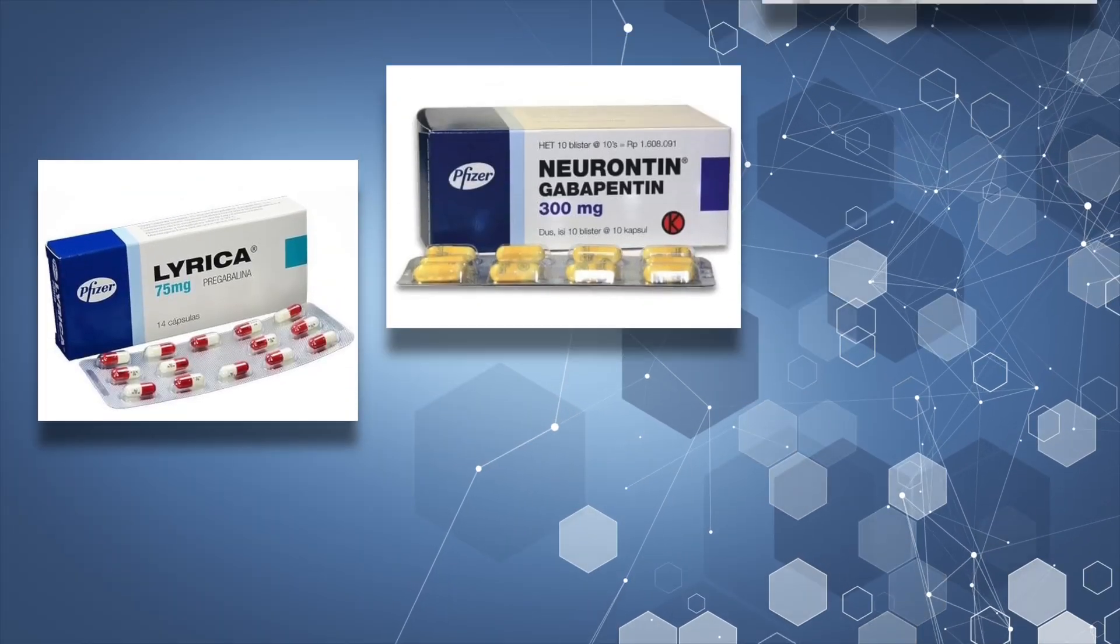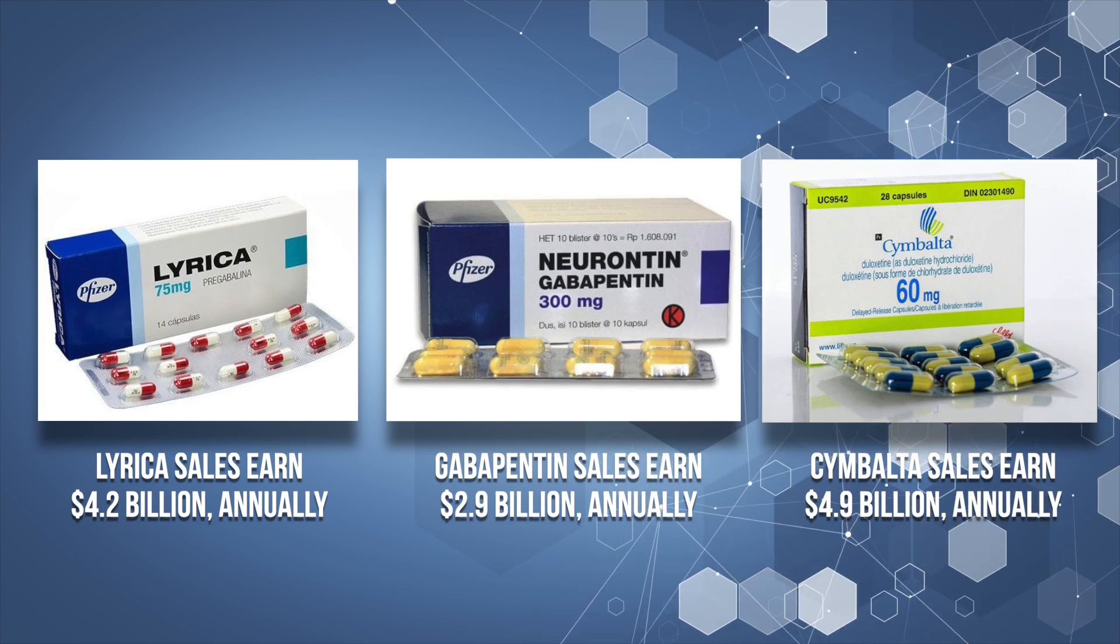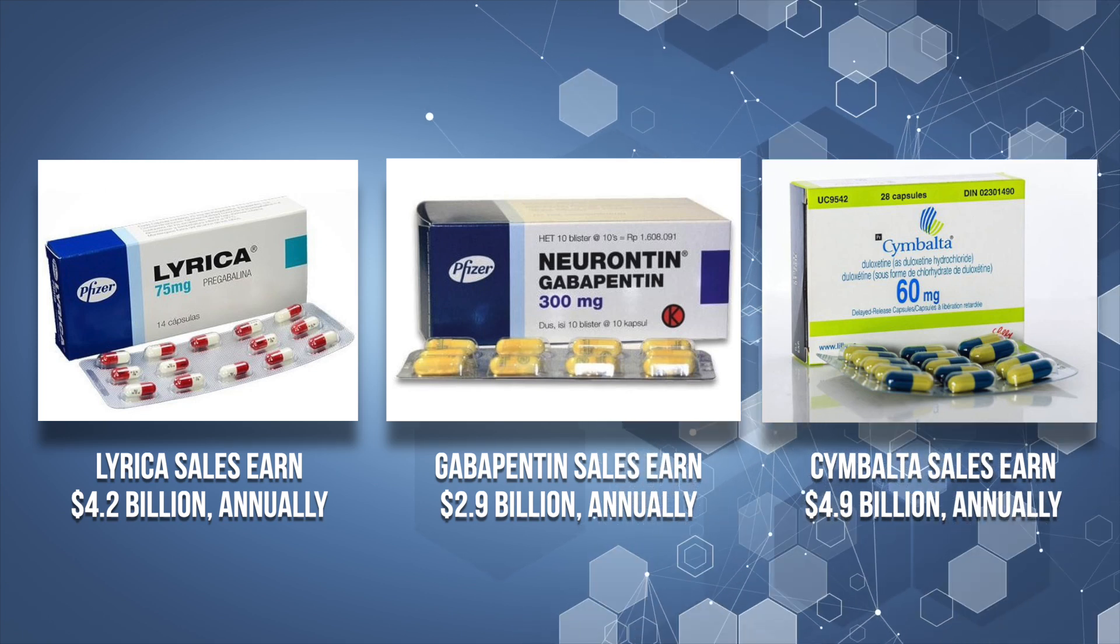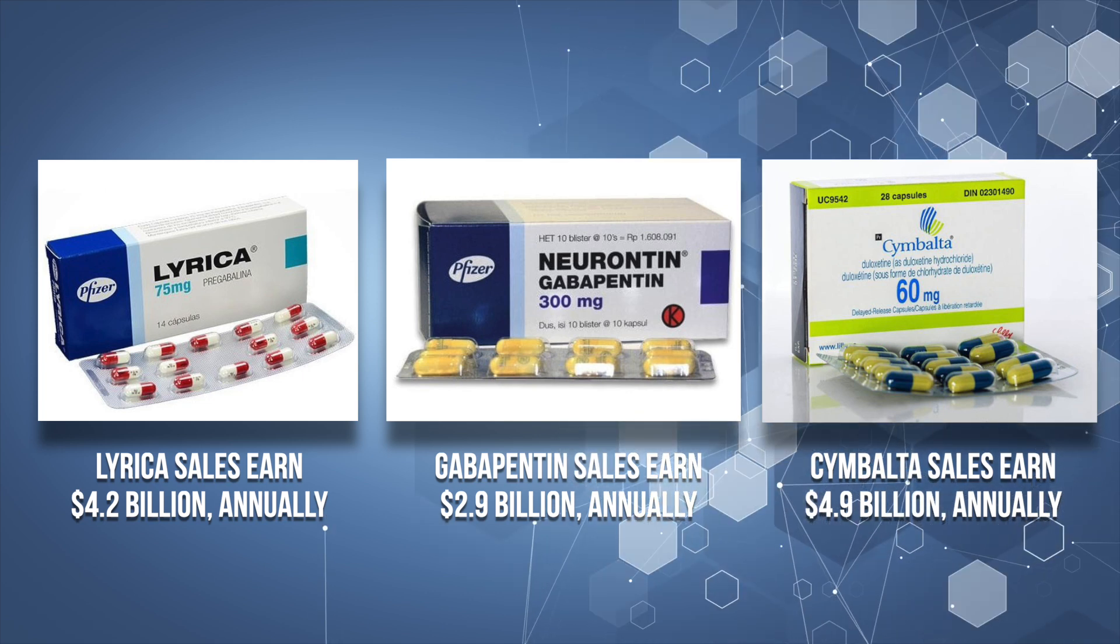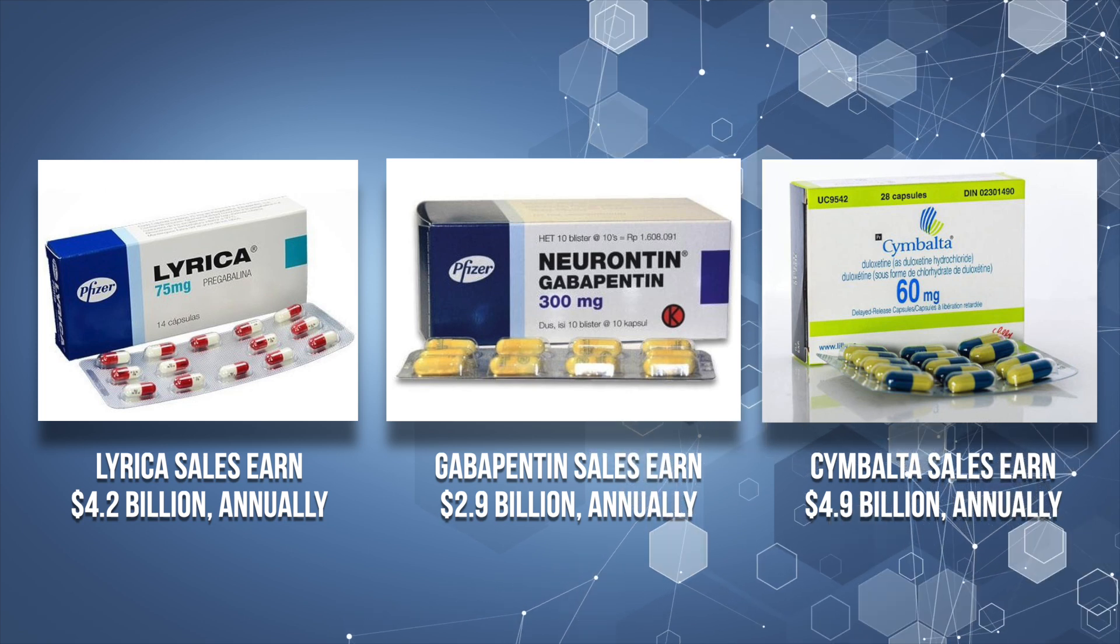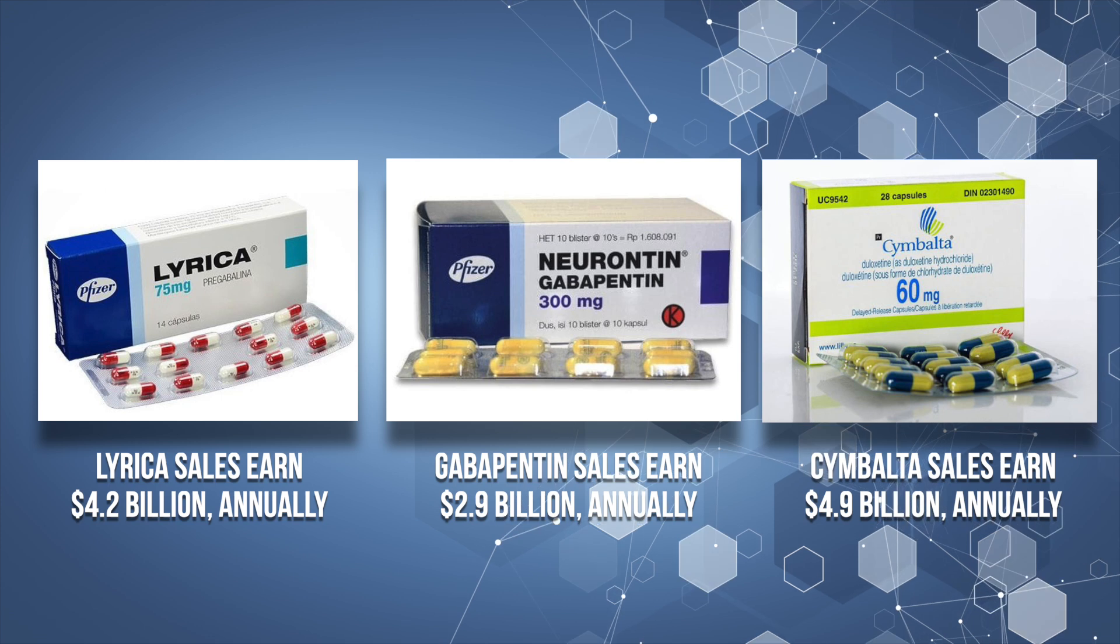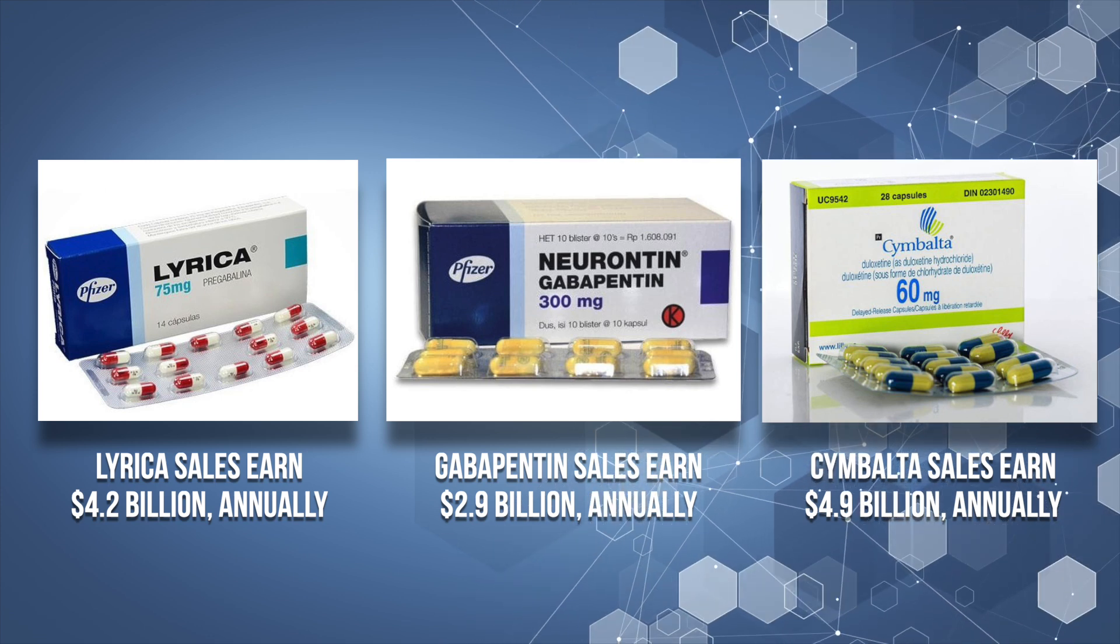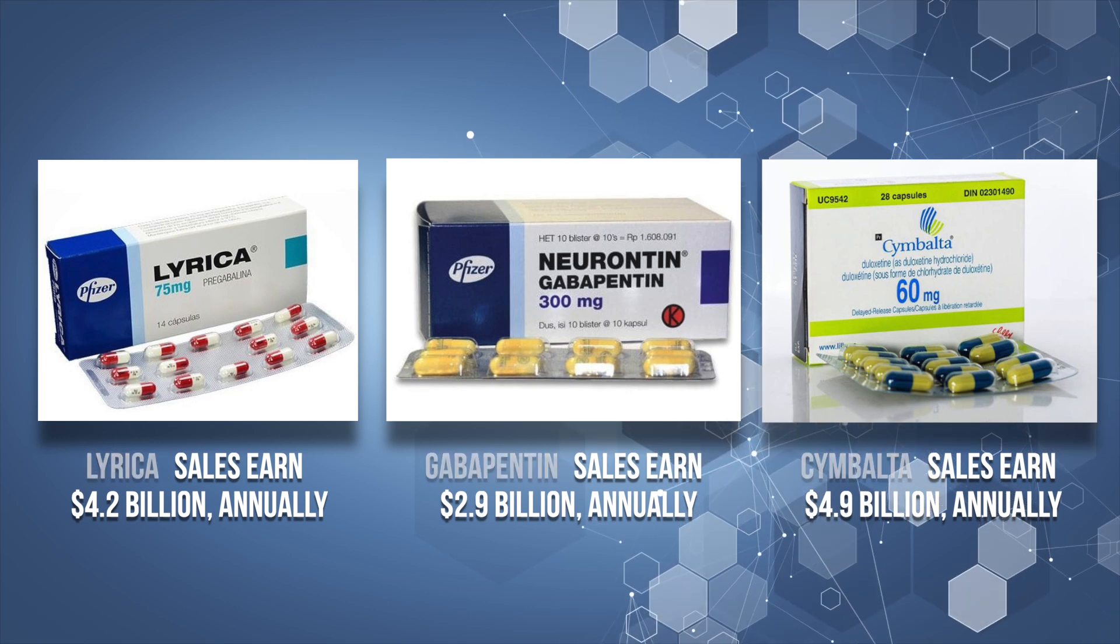The leading medications used to treat peripheral neuropathy are Lyrica, Gabapentin, and Cymbalta. Lyrica sales annually earn $4.2 billion. Sales for Gabapentin average $2 billion annually. And Cymbalta sales average $4 billion every year. After looking at these figures, do you think the pharmaceutical companies want you to know that you have alternatives other than their medications? Of course they don't.